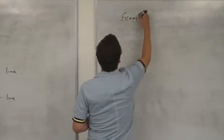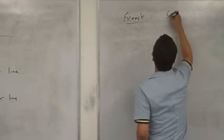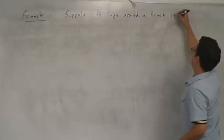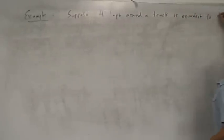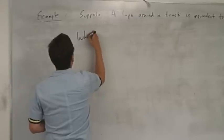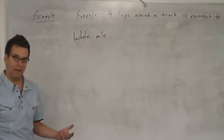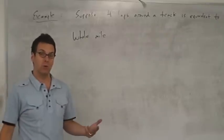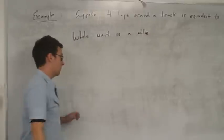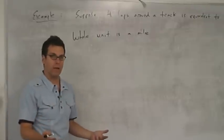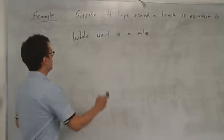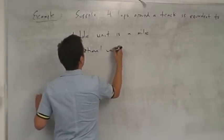Suppose you are running around a track, and four laps around the track is equivalent to one mile. In this case, the whole unit is a mile — that's the unit you'd use to tell people how far you ran. But we're going to measure in terms of a smaller unit, which is a lap. So the fractional unit is a lap.